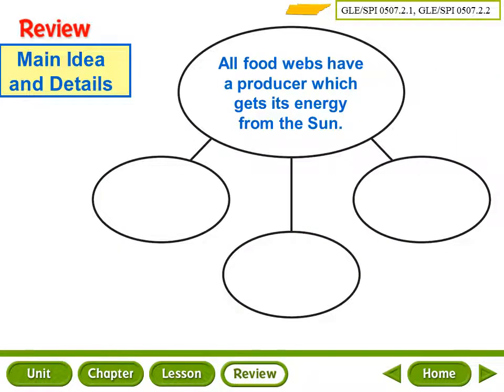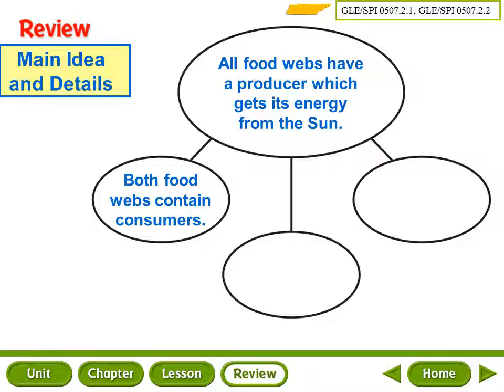Here are your reading comprehension skills. Draw this main idea and supporting detail diagram in your interactive student notebook. The first one has been filled out for you: all food webs have a producer which gets its energy from the sun. Both food webs contain consumers. Please complete the next two supporting details.